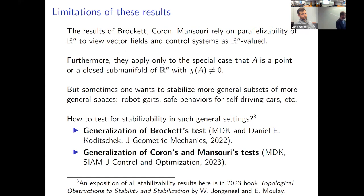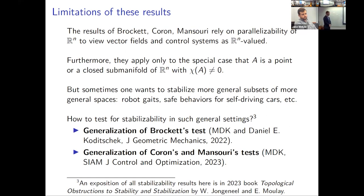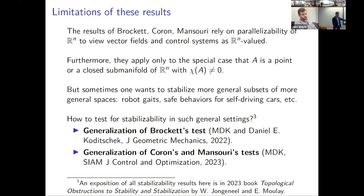I'll explain two ways to test for stabilizability in more general settings. The first is a generalization of Brockett's test, based on work I did with Dan Koditschek while I was here in GRASP. Then I'll also talk about some solo work I did to generalize the Coron and Mansuri tests. There's an exposition of all these results and a tutorial on the relevant mathematics in a book, if you're interested.